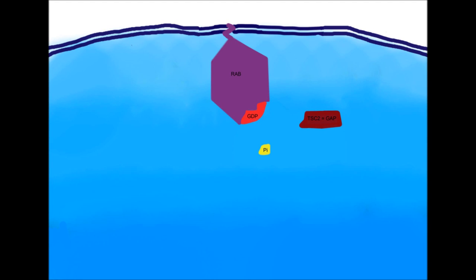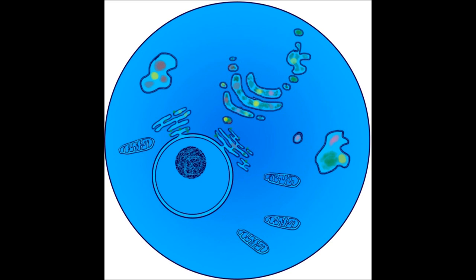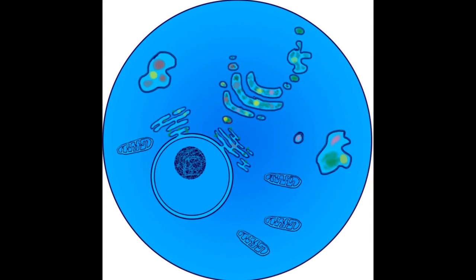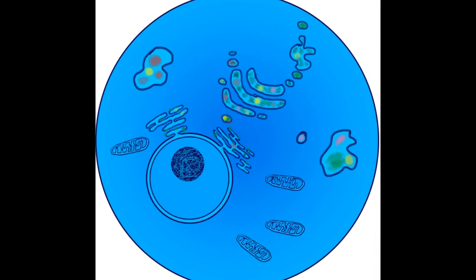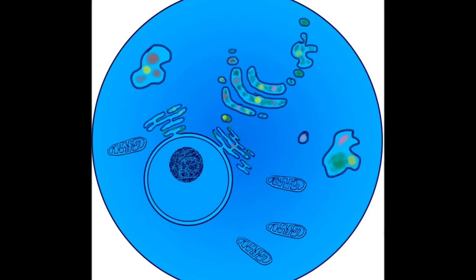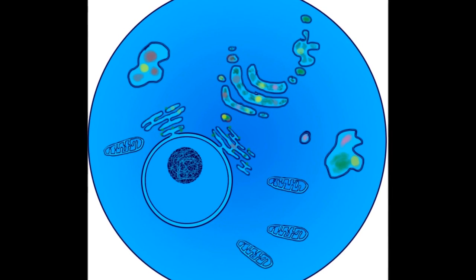In the main part of this video animation, we will be focusing on RAB5A in vesicular transport from the trans-Golgi network to the early endosomes. However, it should be noted that the general principle behind this is the same for all RAB GTPases.